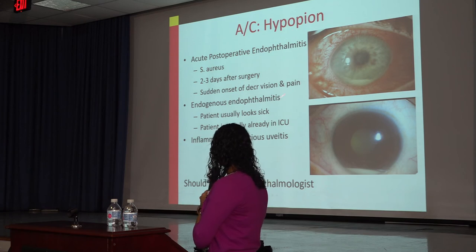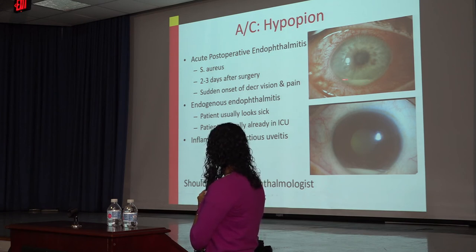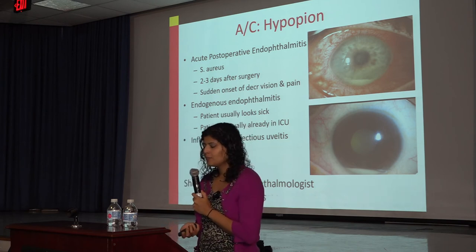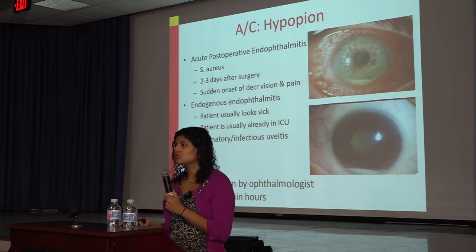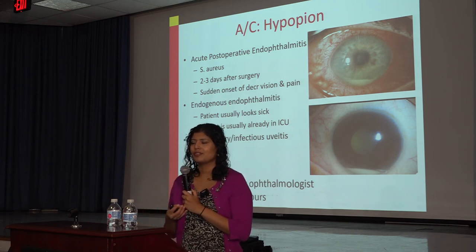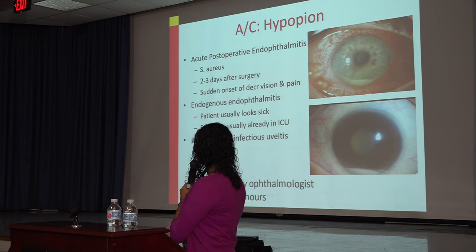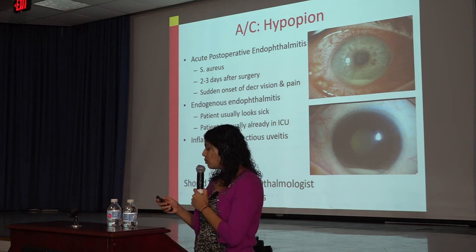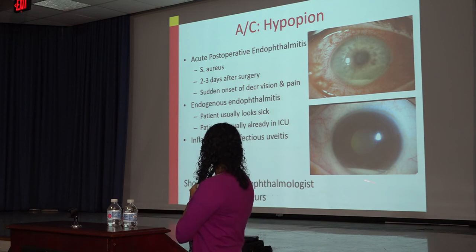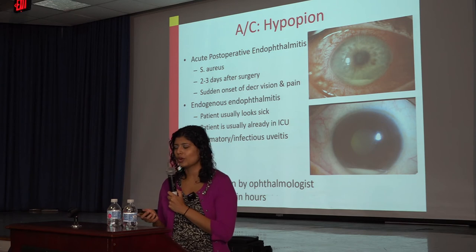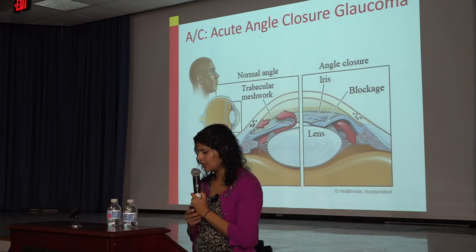Hypopyon is inflammation that has settled and formed a visible layer in the anterior chamber. It can be infectious or non-infectious. If a patient had cataract surgery a month ago and now presents with blurry vision and redness with a hypopyon, that's an infection — send urgently. Either way, any time you see a hypopyon, it is not a good sign and warrants urgent referral.